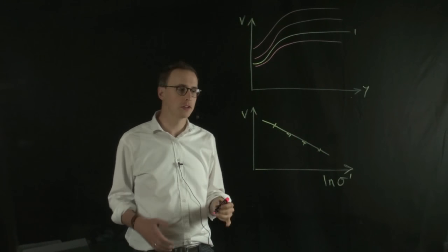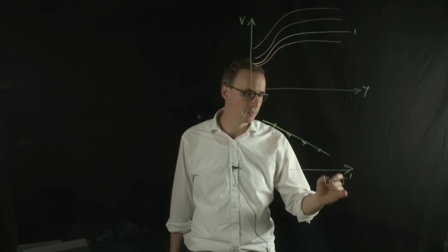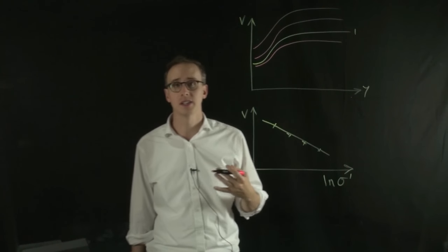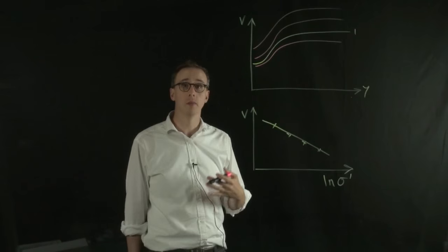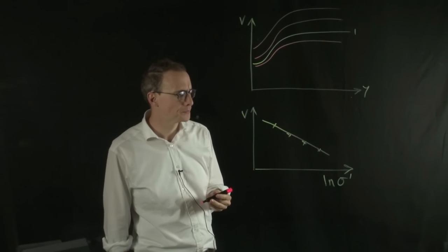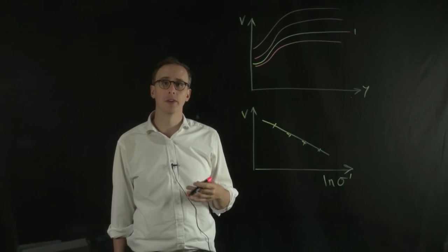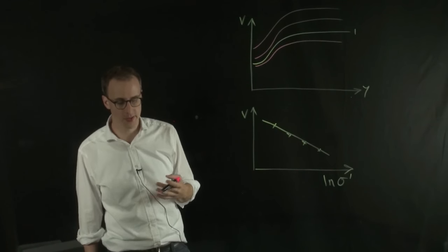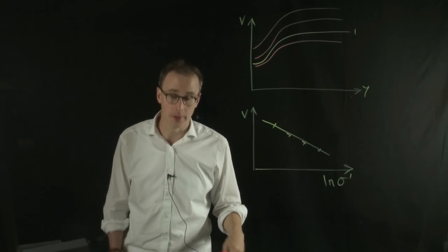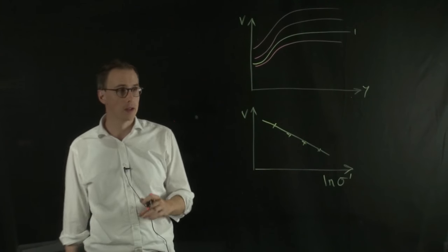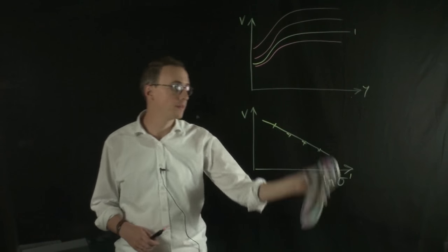But we also know that there's a relationship between effective stress and shear stress within the material, the Mohr-Coulomb failure envelope. So what we can do is plot these three things together on one set of axes, and that would be in three dimensions. So let's just make some space for that.